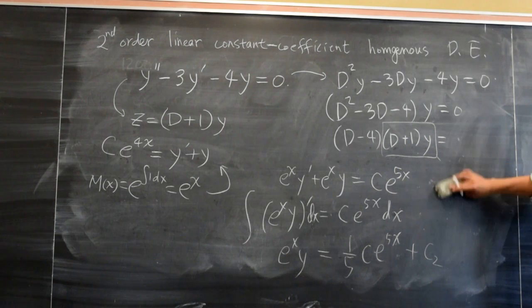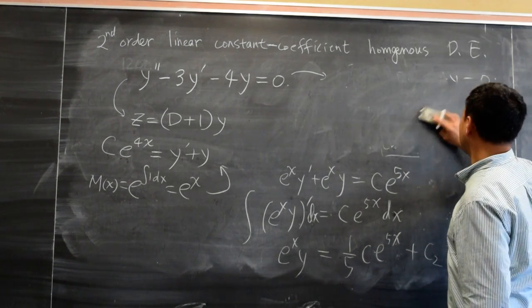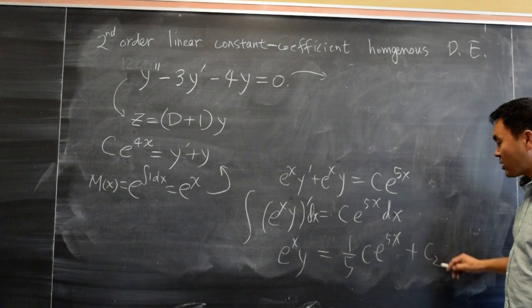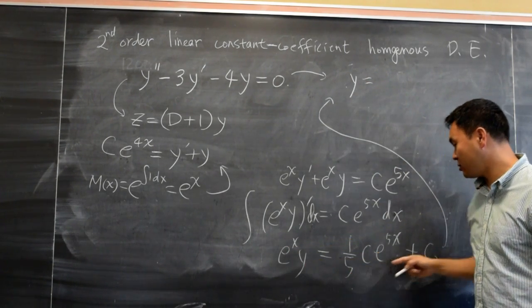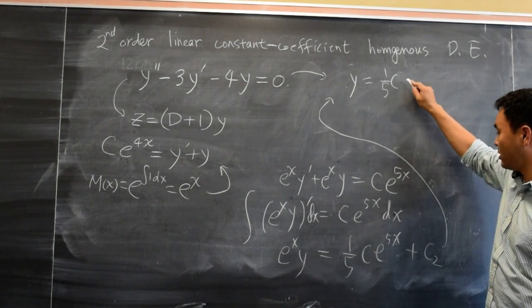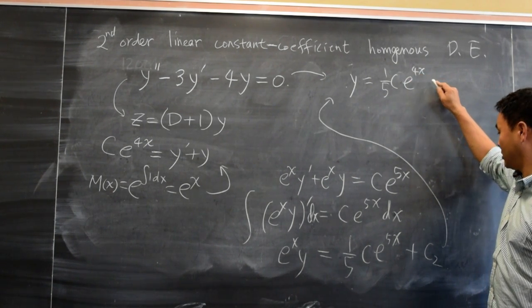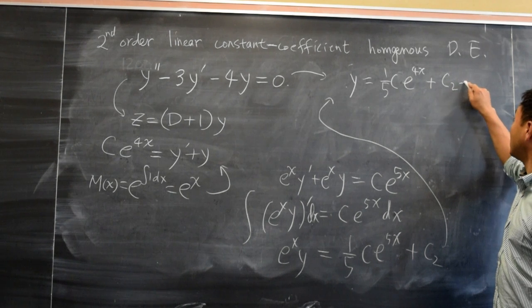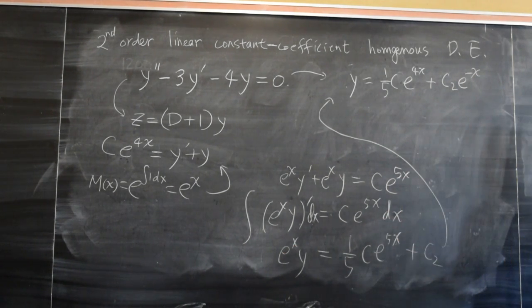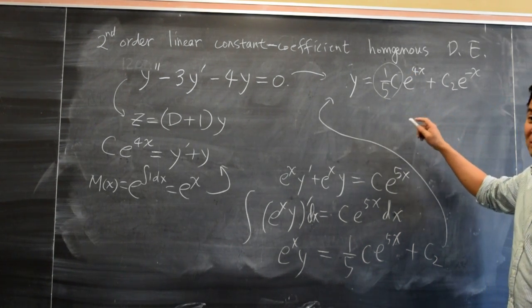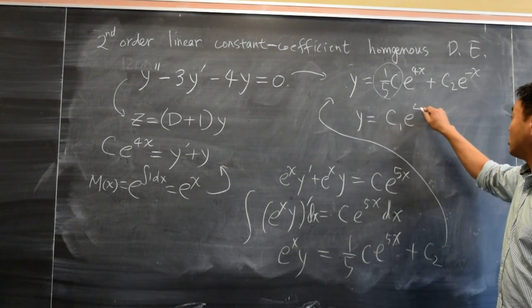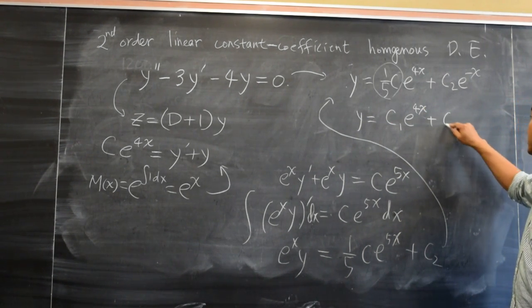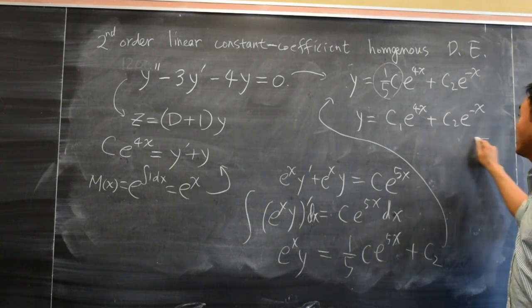And we are almost there. We just have to now solve this for y. And let's see, y is, if I divide by e to the x, I get 1/5 c e to the 4x plus c2 e to the negative x. Because if you divide by e to the x, the same as e to the negative x. And then I will just call this first one as c1. So y is equal to c1 e to the 4x plus c2 e to the negative x. And that's your final answer.